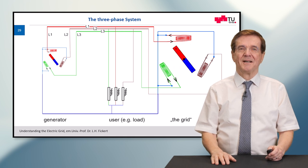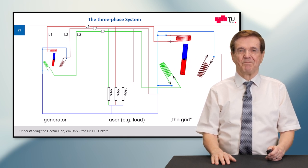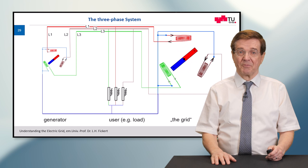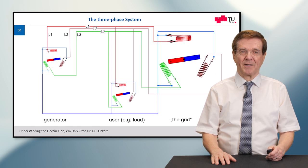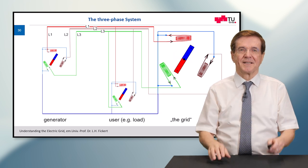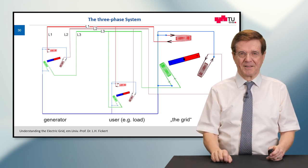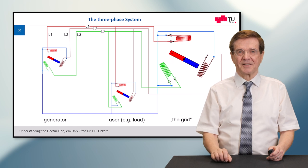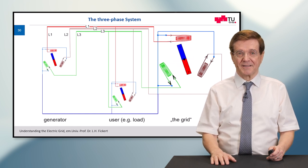The grid is represented by a very, very, very big machine. And if we replace the load by a motor, for example, you see all these are rotating in the same sense, at the same speed, in the same direction. And this is the secret of the three-phase system.